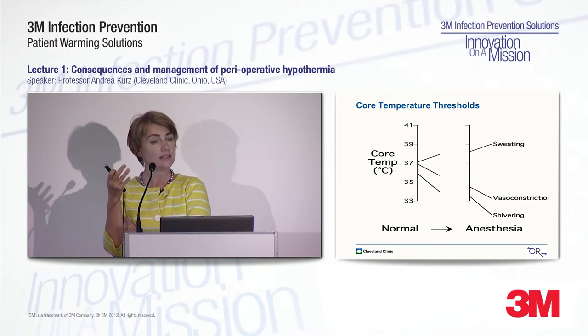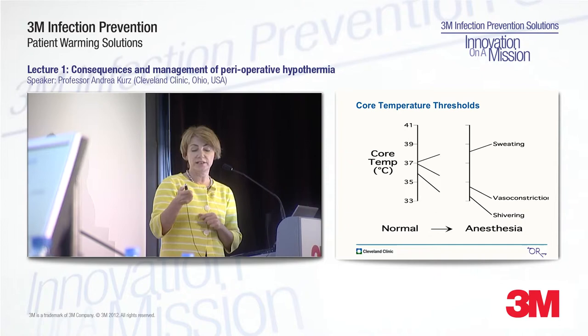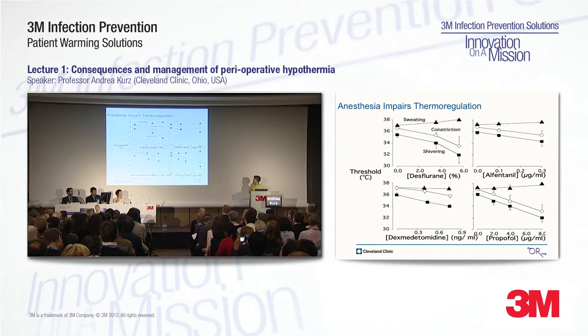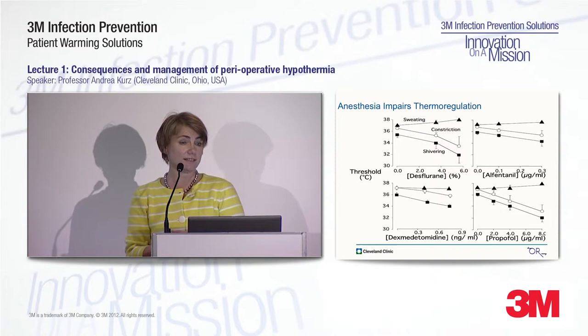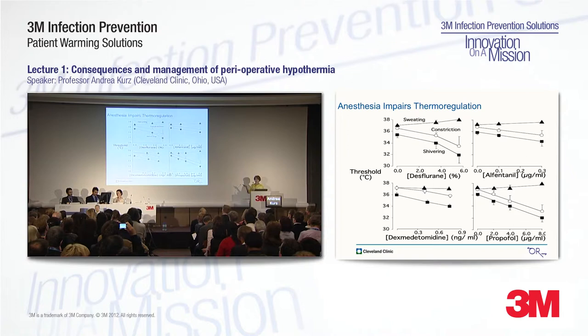But that changes dramatically once we start our anesthetic. With anesthesia, the interthreshold range can become as large as 3 or 4 degrees. Almost all anesthetics tested so far impair central thermoregulatory control. On this slide, you see examples of the most typically used inhalation anesthetics, opioids, dexmedetomidine, and propofol.